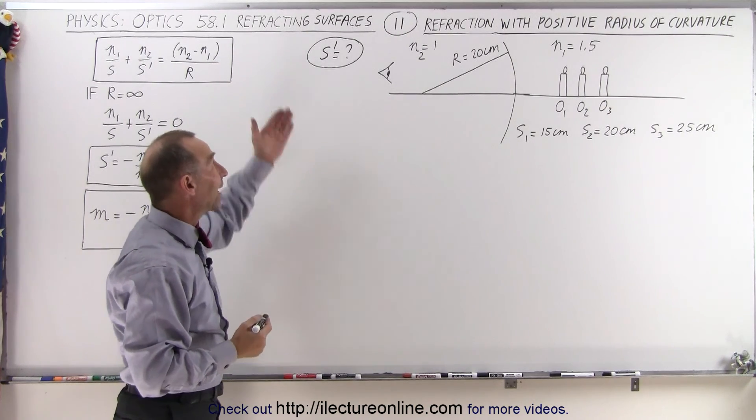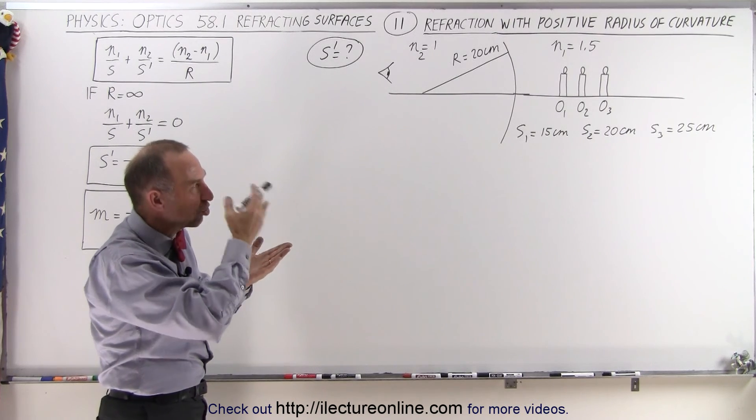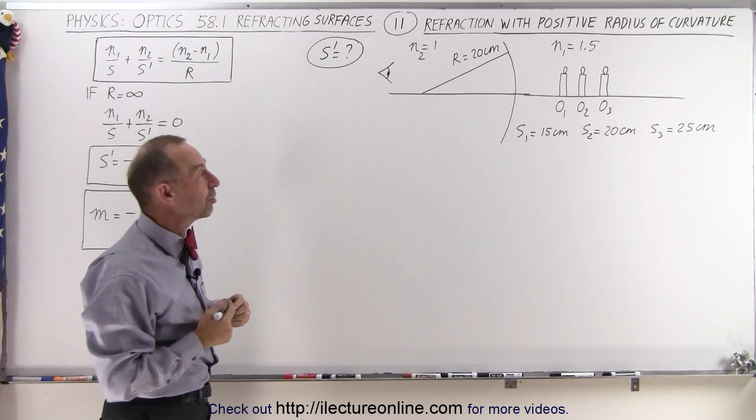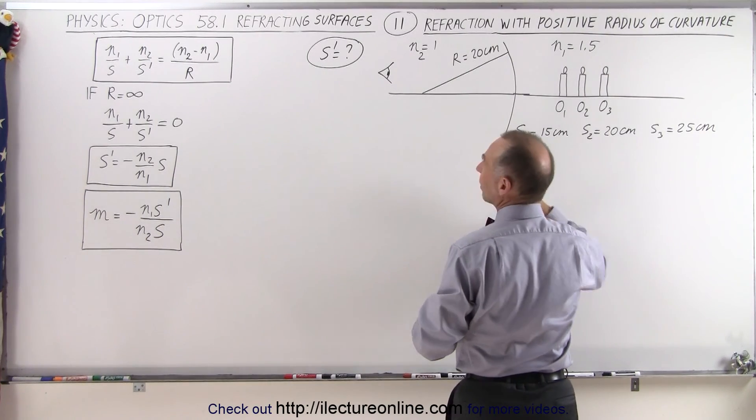Alright, let's find S' in each of the three cases, see where the image will appear, and see how the image changes by changing the position of the object. Starting with the first object.